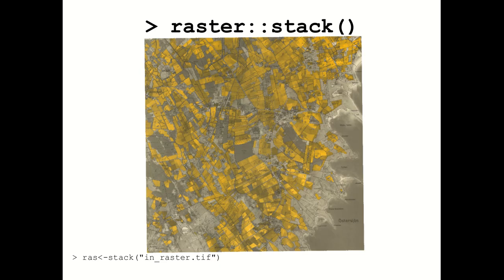This is the map we're going to digitize — the economic map of Sweden, one map sheet from southern Sweden made in the 1940s. Here we have an aerial photograph that has been colored in: yellow indicates arable land, darker areas are forest with trees, and lighter areas are open areas. We import this using raster's stack function.